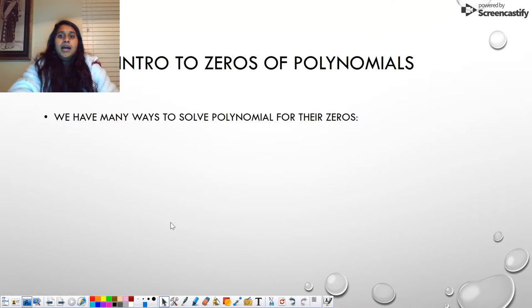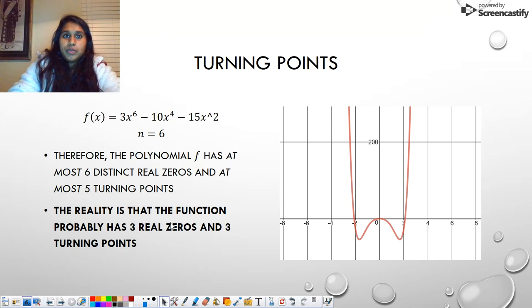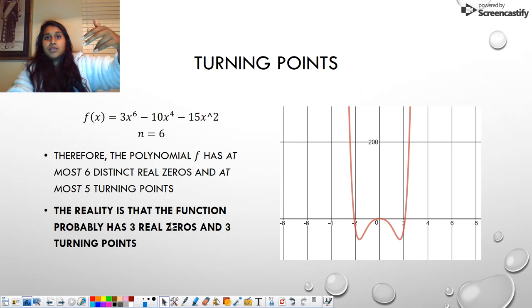That's really all we're going to talk about with turning points. So if I ask you a question in the future about how many turning points a function has, you tell me n minus 1. If I ask you how many distinct zeros, you tell me n. If I ask you how many turning points, you tell me n minus one. And n is simply the greatest exponent in your polynomial, the largest power.